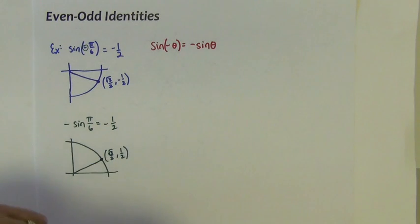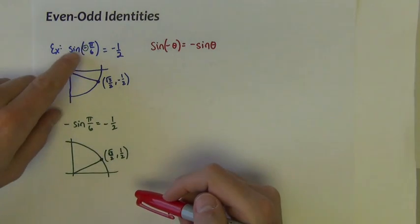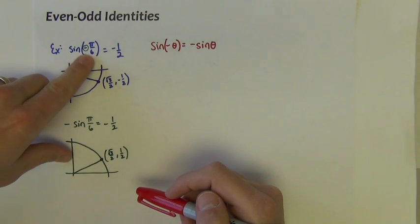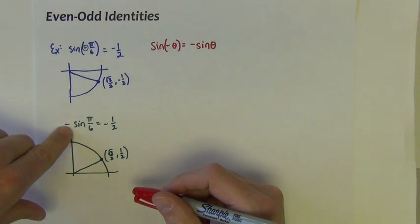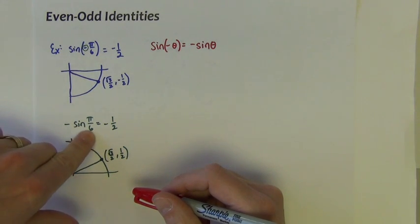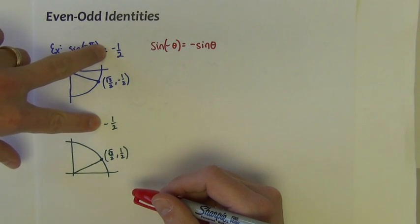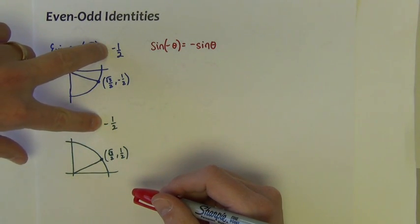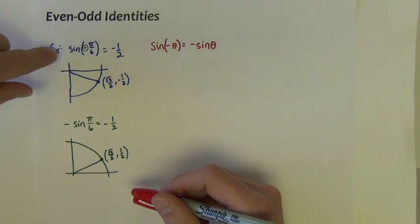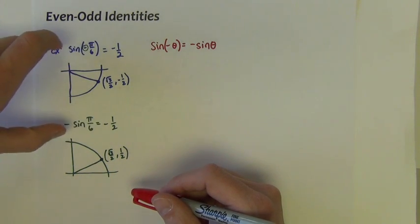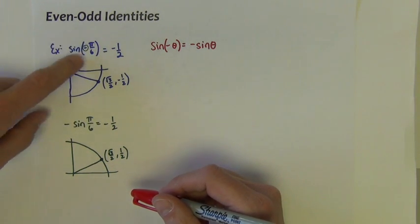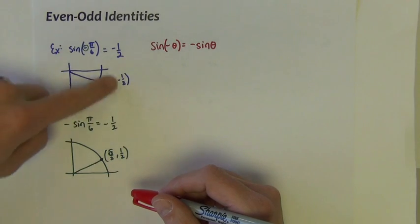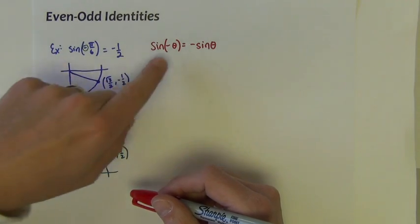So you can see that the sine of negative pi over 6 is equal to the opposite of the sine of pi over 6. They have the same value of negative 1 half. That relationship would be true of any angle on the unit circle.